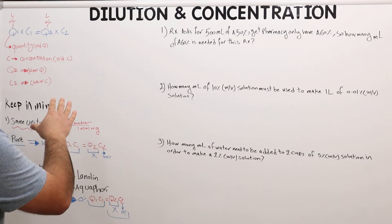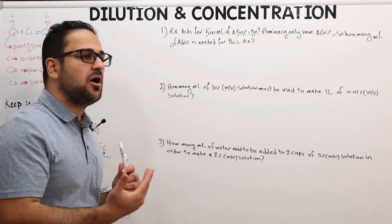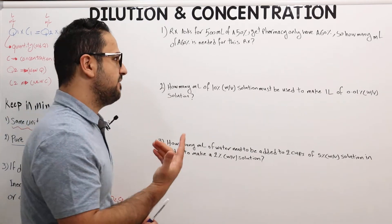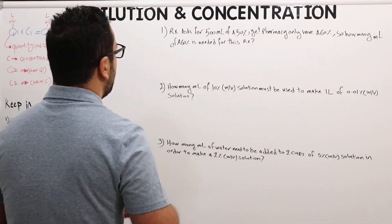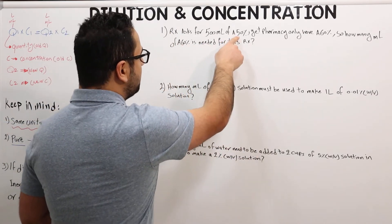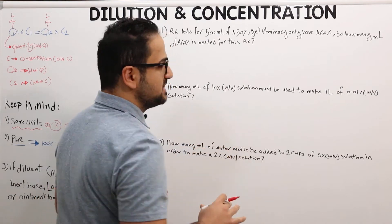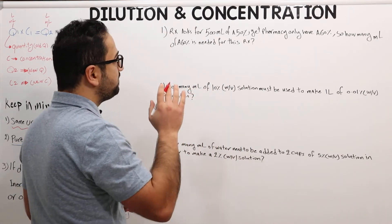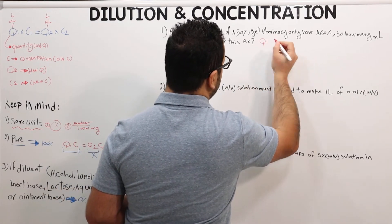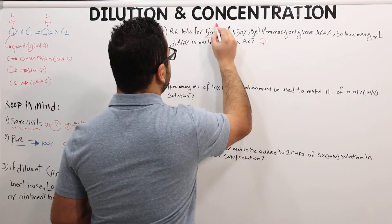Now that we have an understanding of the dilution and concentration formula, let's get into some questions for a better understanding on how to approach this equation in questions or when working in a pharmacy. Question number one: a prescription asks for 500 mL of a 50% solution.